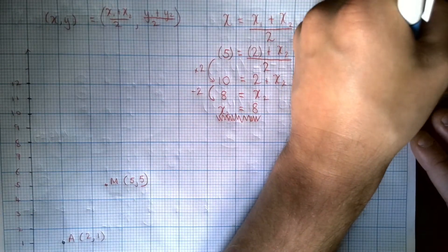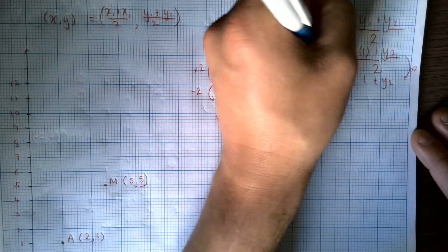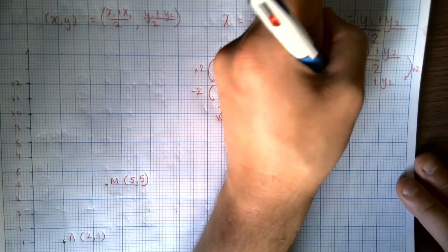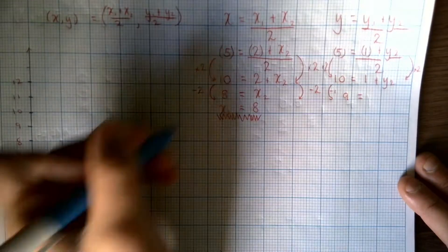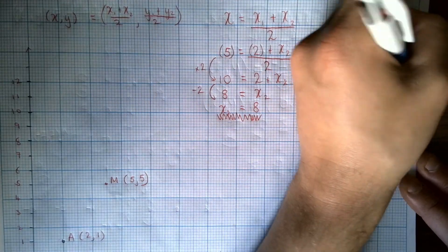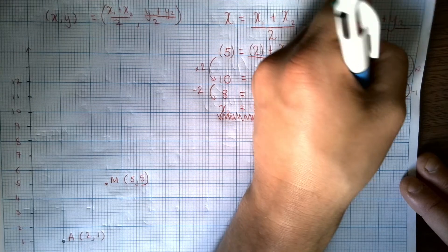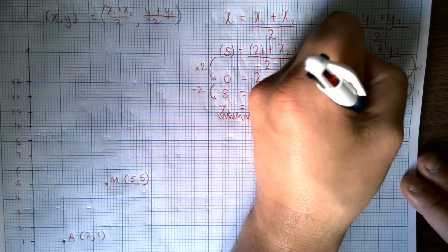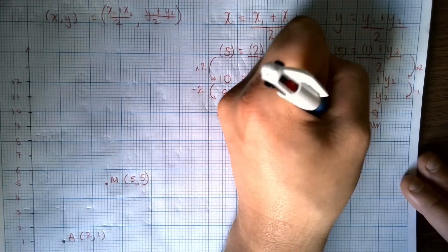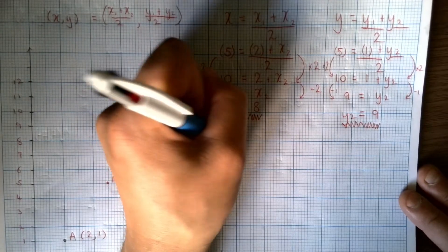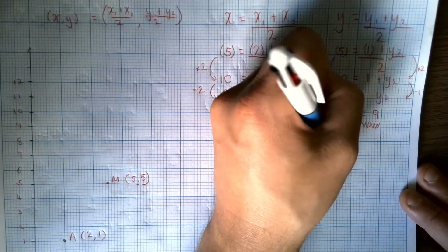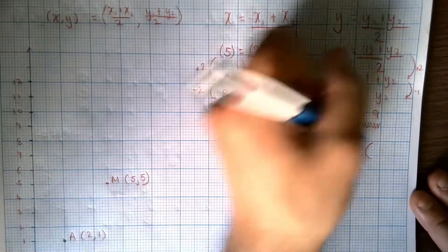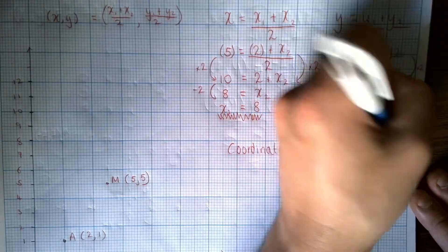And then we're going to subtract 1 from both sides. That's going to leave me with 9 equals Y2. And then we could just write that as Y2 equals 9. So the coordinates for B is X is 8 and Y is 9.